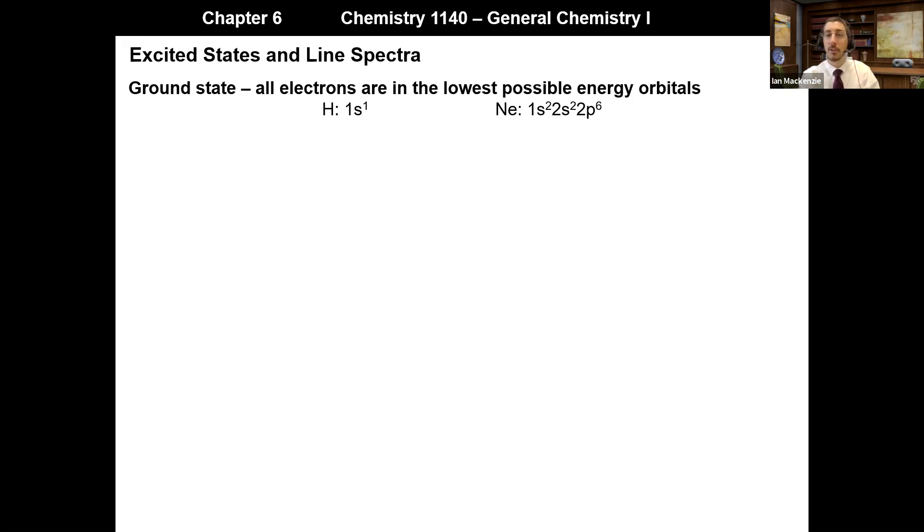So hydrogen, its ground state is just 1s1, neon, its ground state is just 1s2, 2s2, 2p6.